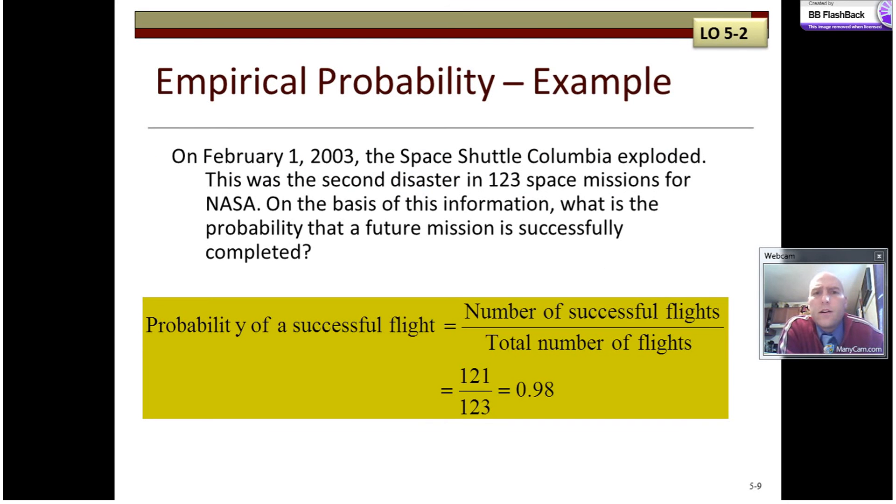So true probability is not one of the three probabilities that we talked about. Well, let's try to illustrate it with a couple of examples. In 2003, the space shuttle Columbia tragically exploded, and it was the second disaster in 123 space missions. If we want to calculate the probability of a successful flight, all we need to do is count the total number of successful flights, which would be 121, divide it by the total number of flights altogether. 121 out of 123 is about 98%. So about 98% of the flights in the past have occurred successfully. So we might expect a 98% chance of success in future events.